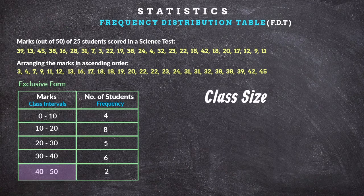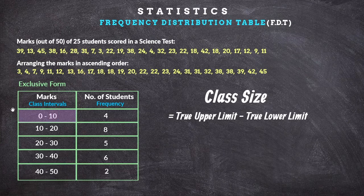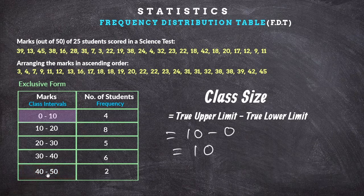What is the class size? Class size is a pair of true class limits. The true lower limit is 0 and the true upper limit is 10. Class size is equal to true upper limit minus true lower limit. So class size equals 10 minus 0, which equals 10. The class interval is the same whenever the size is equal.